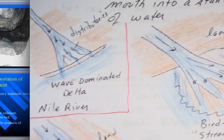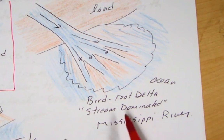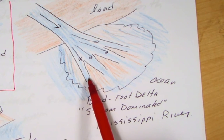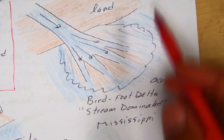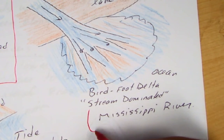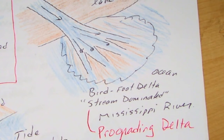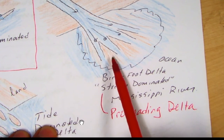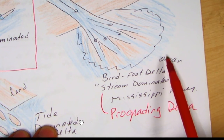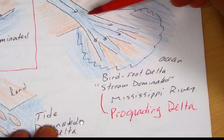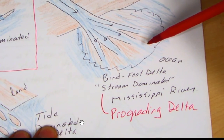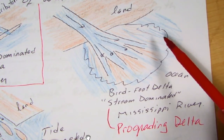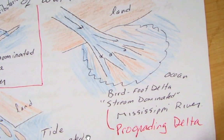The other type of delta is like the Mississippi River — we call this a bird foot delta because it resembles a chicken foot. These deltas are also called a prograding delta because they prograde into their basin, in this case the Gulf of Mexico. You'll see these long arms of the river extending out into the basin with a bunch of sediment.